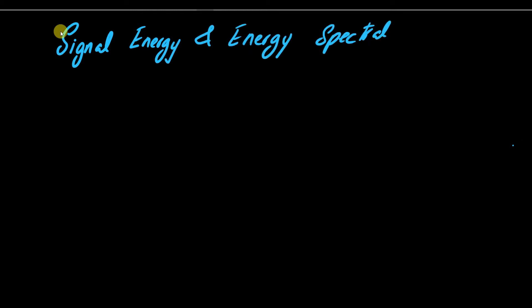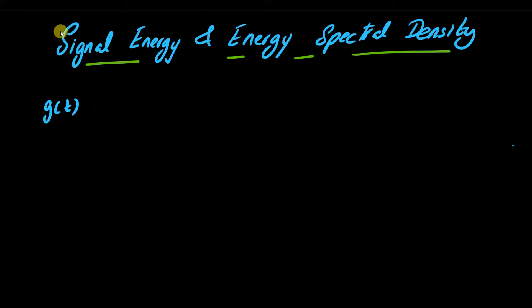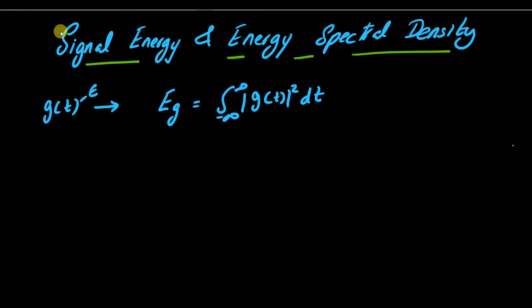In this video we look into signal energy and how it relates with the energy spectral density. We start with a signal G(t), which is an energy signal. The energy is defined as the integral from minus infinity to infinity of |G(t)|² dt. We use the absolute square because we consider this signal to belong to complex numbers.